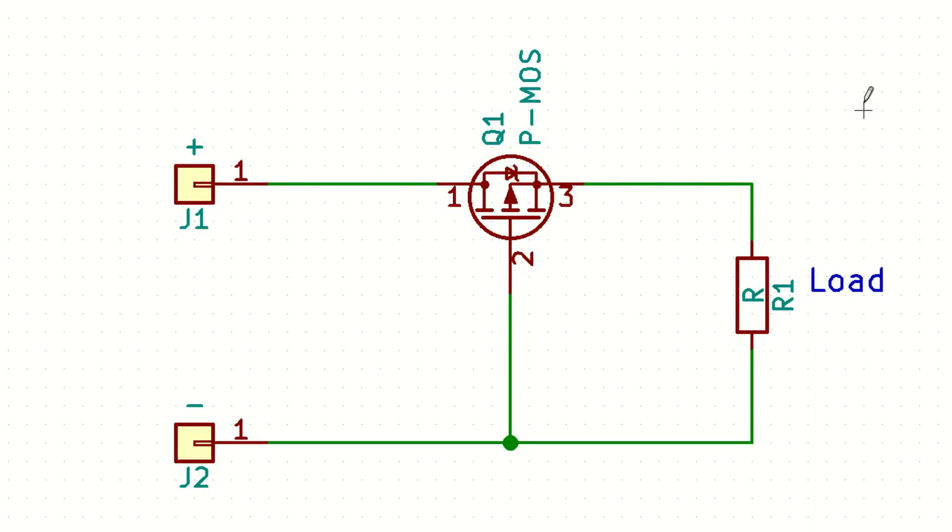And the last circuit I'm gonna show you is P channel MOSFET on the high side which solves few problems which N channel MOSFET on the low side had but usually P channel MOSFETs are slightly more expensive. Again we connected the other way round than usual.